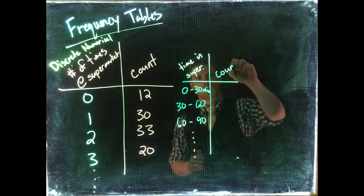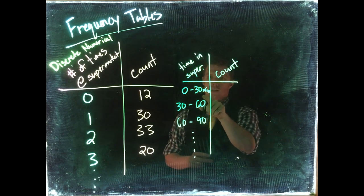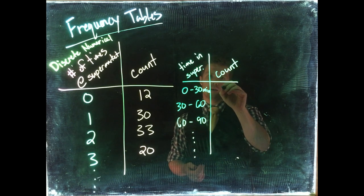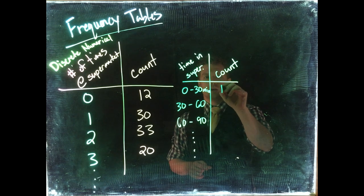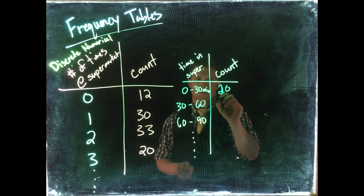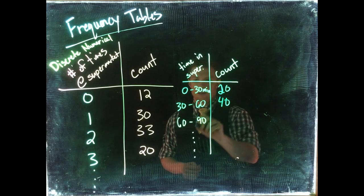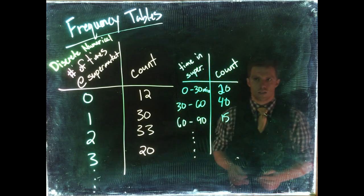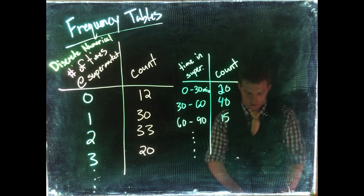And we do the same thing. We do count, and over our sample everyone who fit into this bin we would count. So we'd say that there were, we'll say twenty people here, thirty to sixty, maybe that's the majority. So we'll say like forty, sixty to ninety, there were fifteen, and we would continue on this as well.